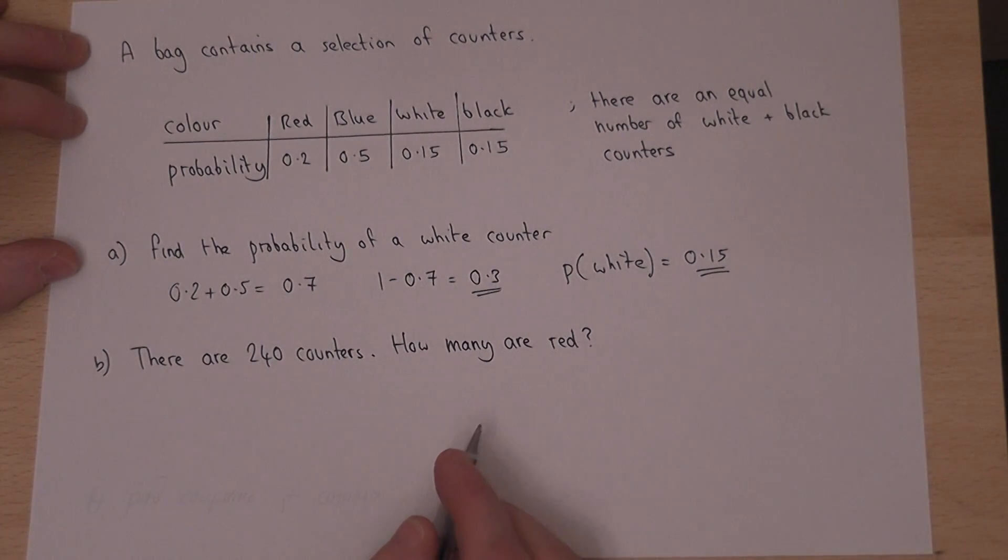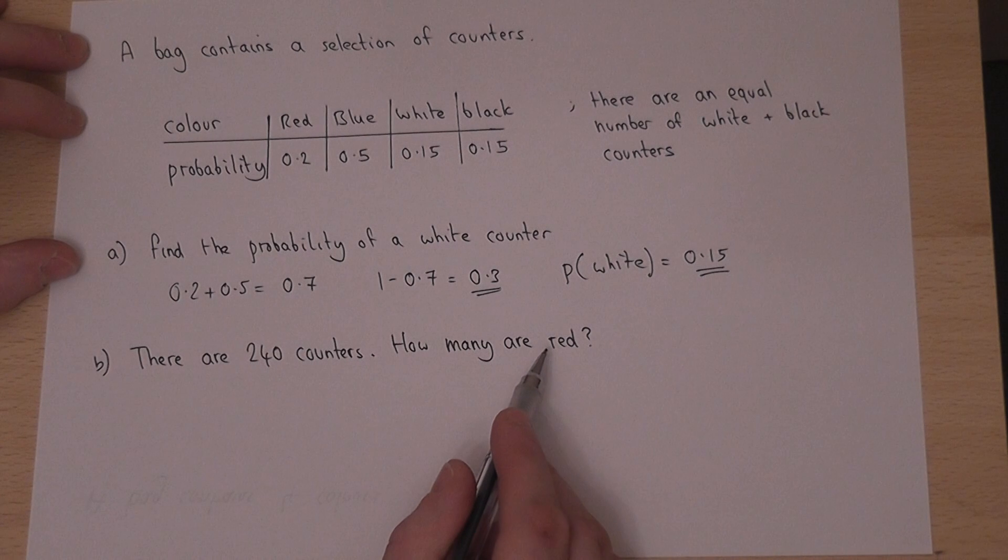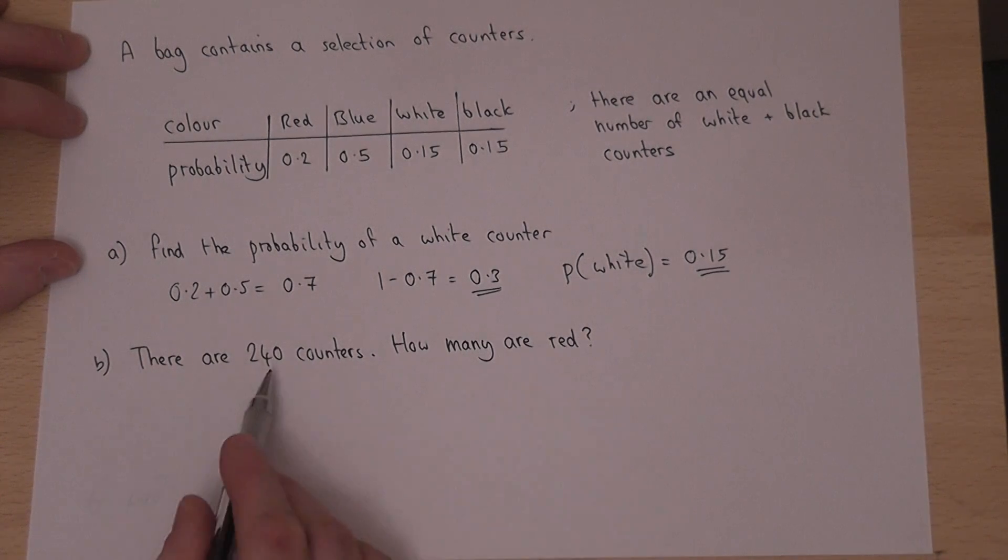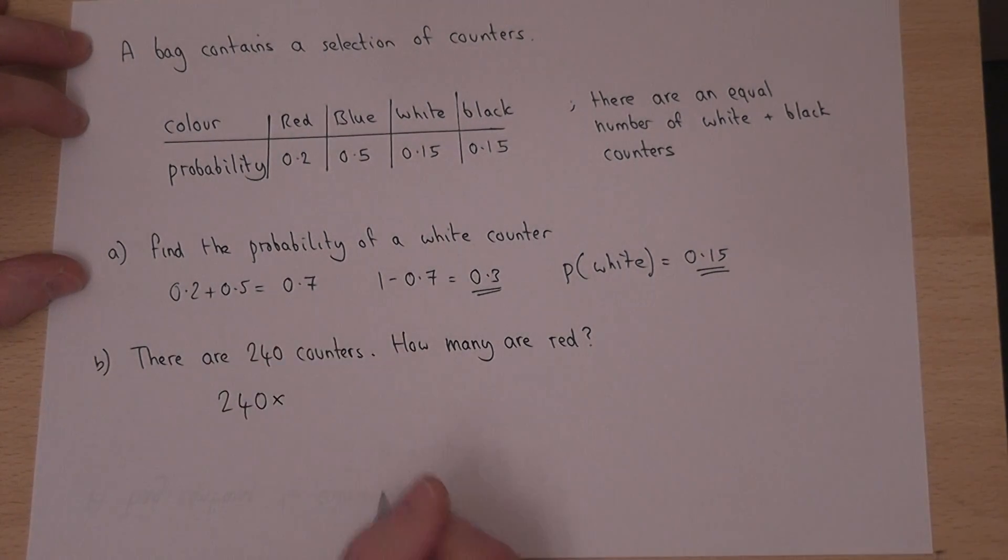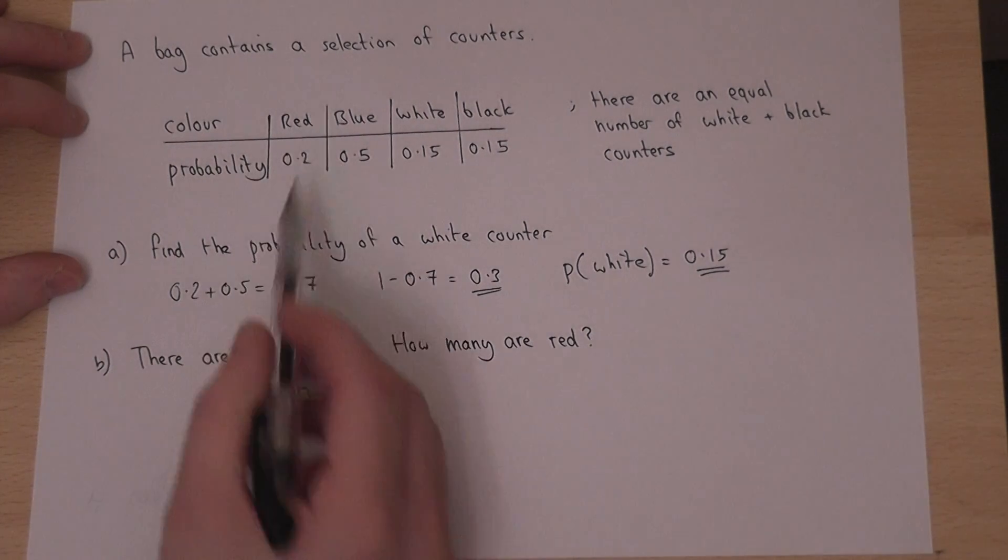In the second part we're asked to find how many red counters there are if there are 240 counters in total. For this we work out 240 times 0.2, the number of counters times by the chance of a red counter.